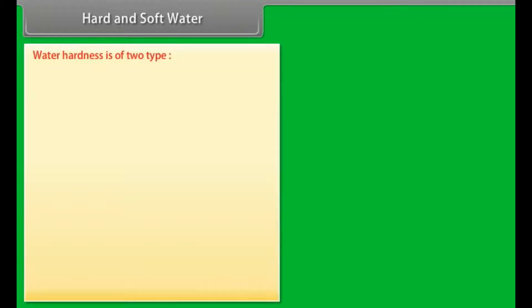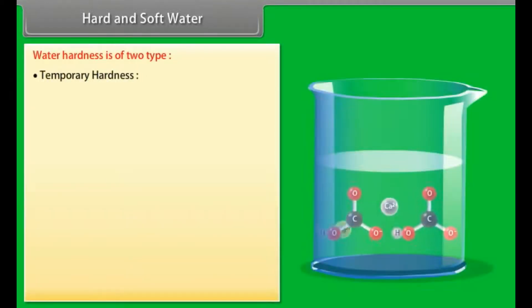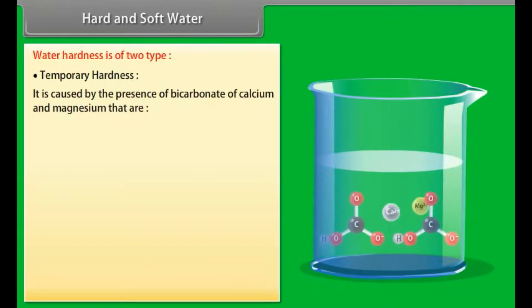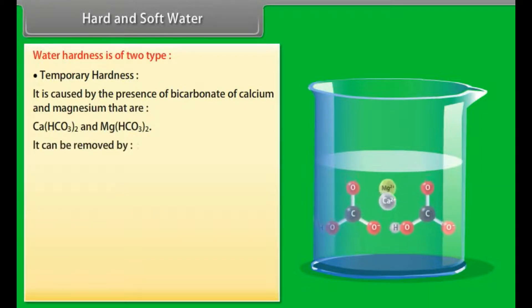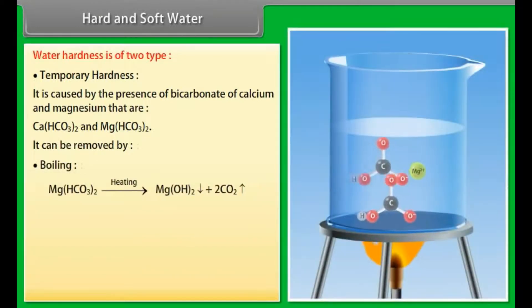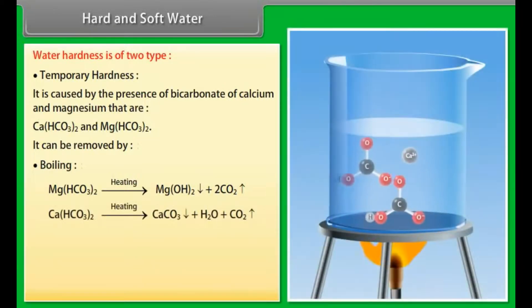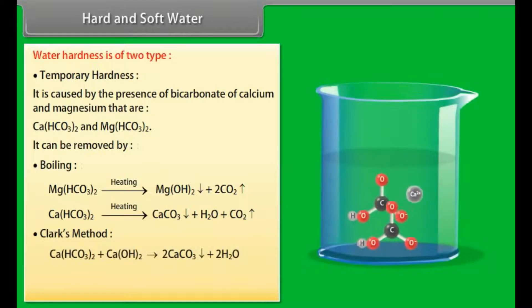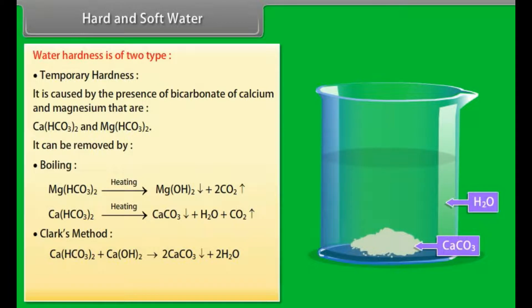Water hardness is of two types. Temporary hardness is caused by the presence of bicarbonate of calcium and magnesium. It can be removed by boiling. Soluble bicarbonates change to carbonates which are insoluble and get precipitated. Clark's method: When calculated quantity of lime is put in, it causes precipitation of calcium carbonate.